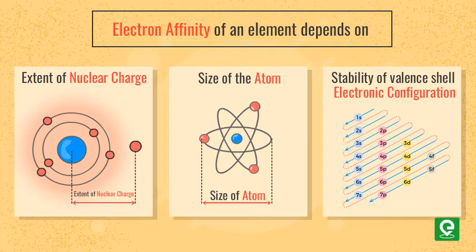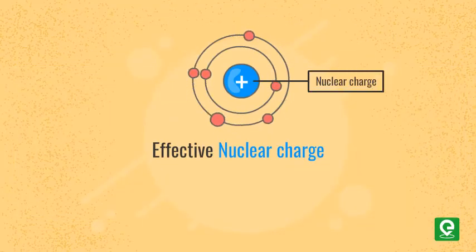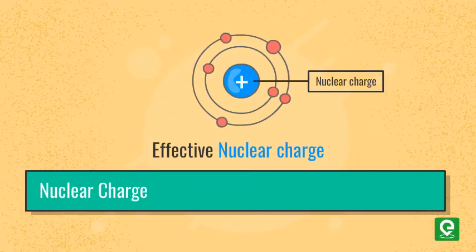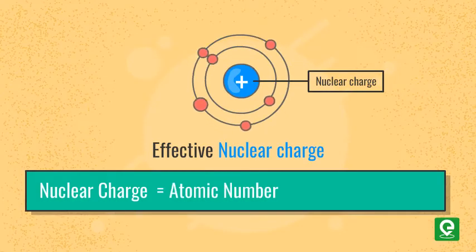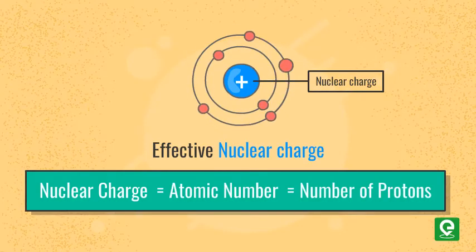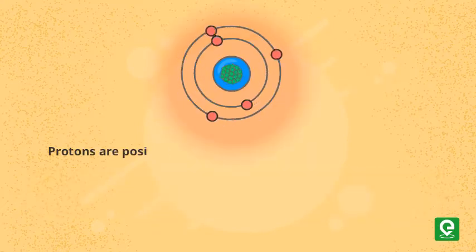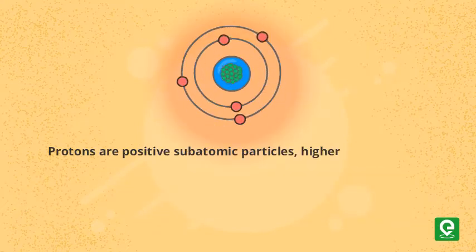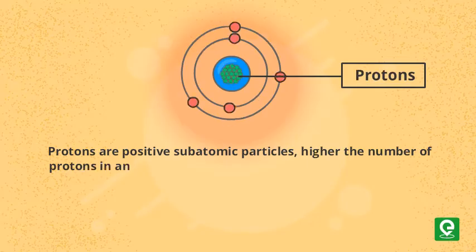Effective nuclear charge: nuclear charge is also synonymous to the atomic number, which is equal to the number of protons present in the nucleus. Protons are positive subatomic particles. Higher the number of protons in an atom, the greater is the attractive force applied on electrons and higher is the electron affinity.